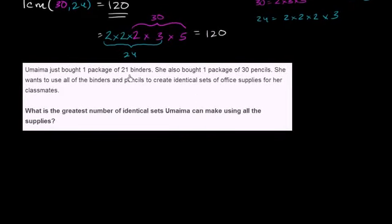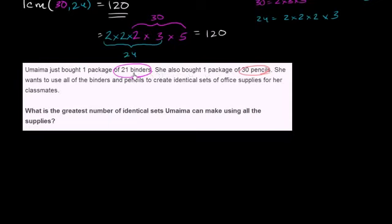Let's do one more. Umama just bought one package of 21 binders and a package of 30 pencils. She wants to use all of the binders and pencils to create identical sets of office supplies for her classmates. What is the greatest number of identical sets Umama can make using all of the supplies? The fact that we're asking for the greatest number is a clue that this is probably dealing with the greatest common divisor.